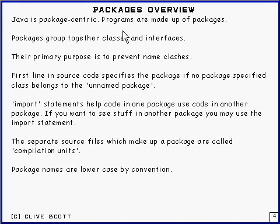The first line in any source code has to specify the package, and everything that's defined from then on — every class or interface defined in the source code — belongs to that package. And if you don't specify a package, all the classes go into something called the unnamed package.